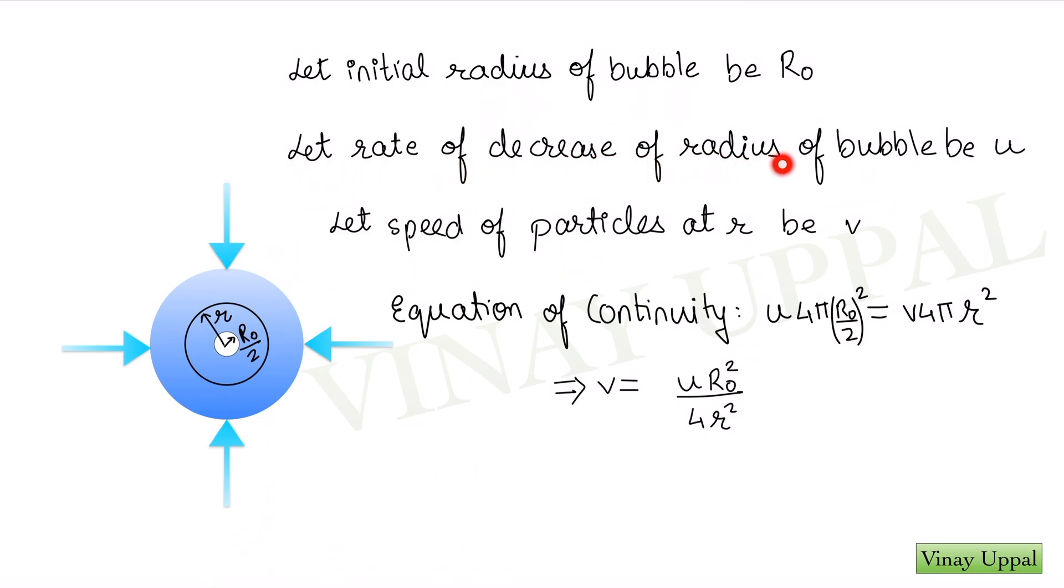Let the rate of decrease of radius of the bubble be U. So the radius of the bubble is decreasing at the rate of U when its final radius is R0 by 2. What that means is physically the particles, the water particles here at the edge of the bubble are all traveling inwards with a speed U. And similarly, let the speed of the particles at a distance R from the center be V. Here on this spherical surface, all these particles are traveling inwards with a speed V. What I am first going to do is I am going to try and calculate the speed V in terms of U by simply using equation of continuity.